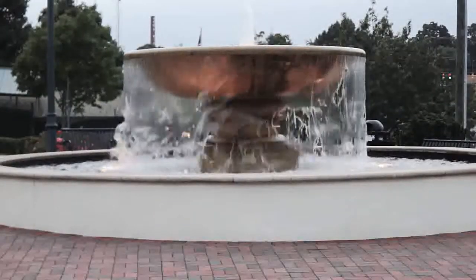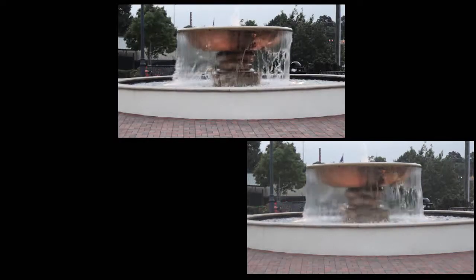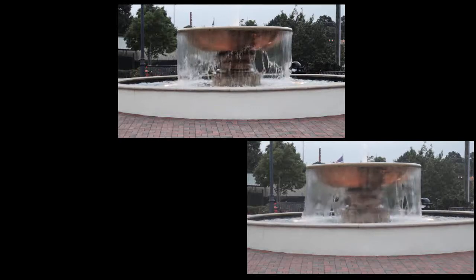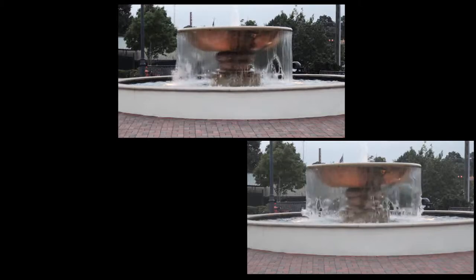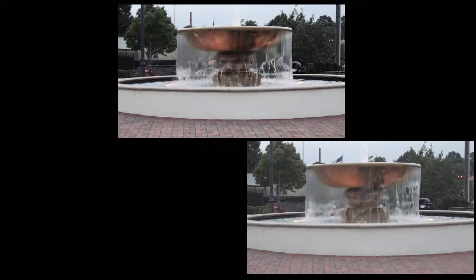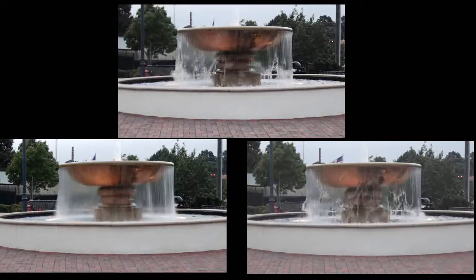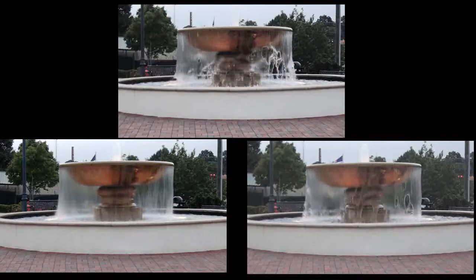Now let us recap. Video on the right was shot at 60 frames per second at an exposure of 1/60th of a second. Video in the middle was shot at 60 frames per second, slowed to 240 frames per second, shot at an exposure of 1/60th of a second. Video on the left was shot at 60 frames per second but at an exposure of 1/4th of a second. See the difference?